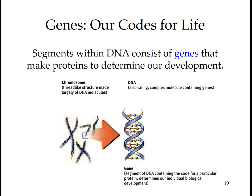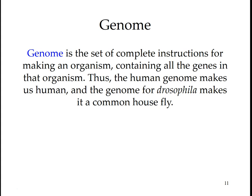Genes are DNA segments that, when turned on, form templates for the production of proteins. By directing the manufacture of proteins, the approximately 30,000 genes that compose the human body determine our individual biological development. The genome provides the complete instructions for making an organism, consisting of all genetic material in the organism's chromosomes. Human traits are influenced by gene complexes — many genes acting in concert. The human genome makes us human, and the genome from Drosophila makes the common housefly.